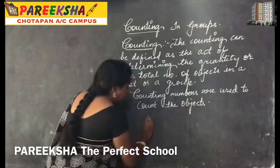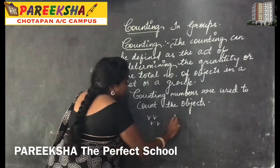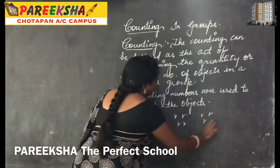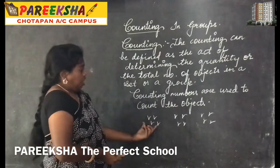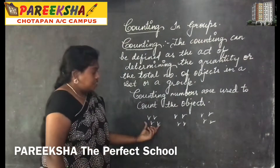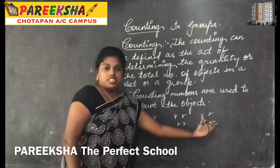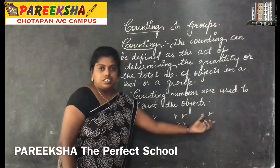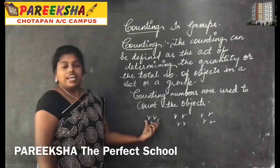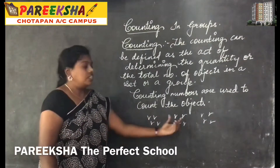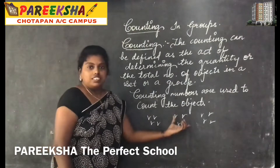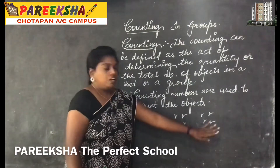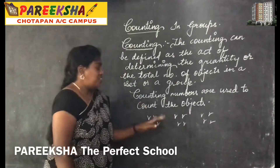Here are some birds in a group. You can see the birds in a group. This is a group, this is a group, and this is a group. This is the first group, this is the second group, and this is the third group. In the first group we can see four birds, in the second group we can see four birds, and in the third group also four birds.